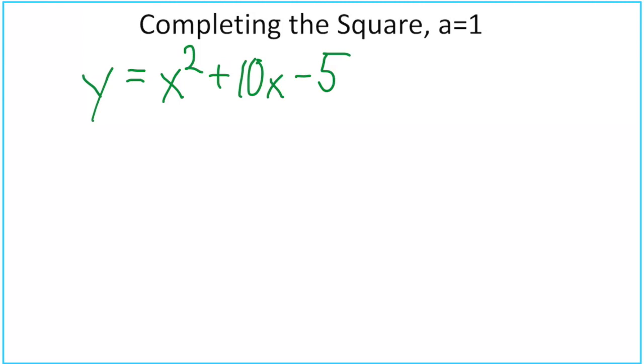So there's our equation, y equals x squared plus 10x minus 5. We want to change this into vertex form so that we could graph it. So the first step is to go ahead and put parentheses around the x squared and the 10x. And then it's always going to be positive at the end. I'm going to leave some space and put my negative 5 on the outside.